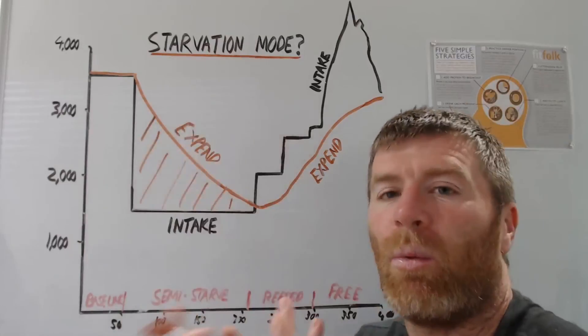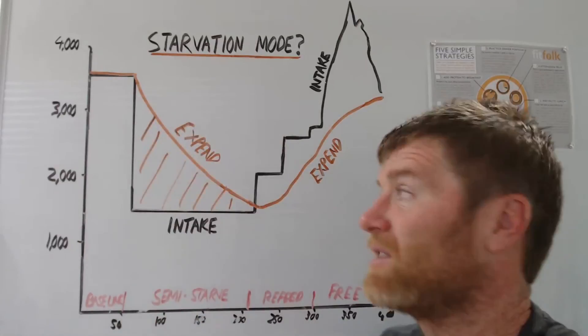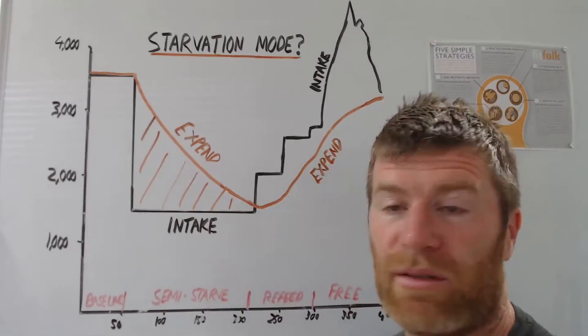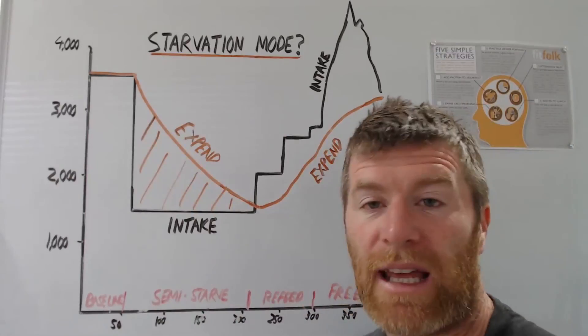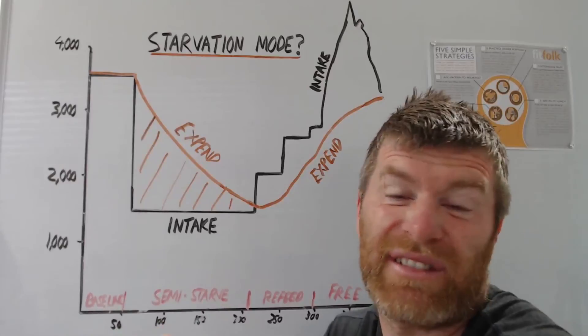But generally, the thing that people think of starvation mode is just that they have no idea what they're putting in their mouth. Because in the UK, women think that when they track stuff, they think they eat 1,590 calories.